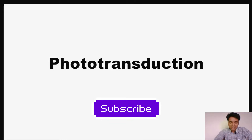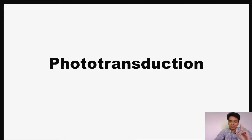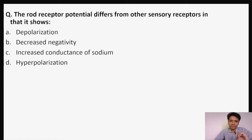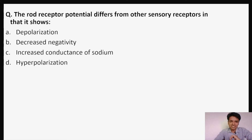Welcome back to the channel. Today we will try to understand the concept of phototransduction via one multiple choice question. The question says: the rod receptor potential differs from other sensory receptors in that it shows — is it depolarization, decreased negativity, increased conductance of sodium, or hyperpolarization?